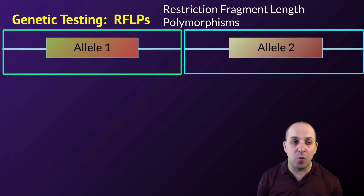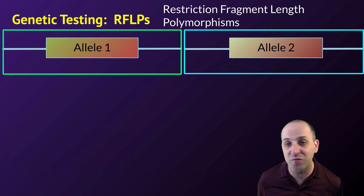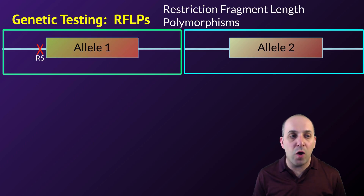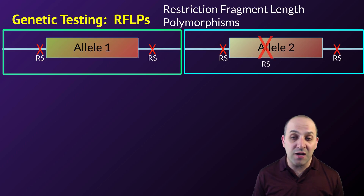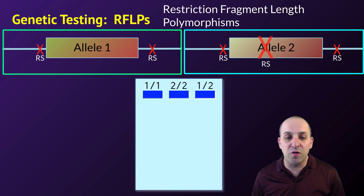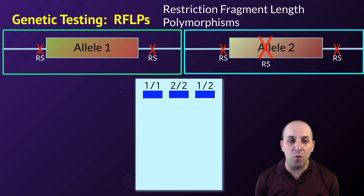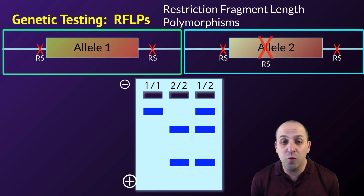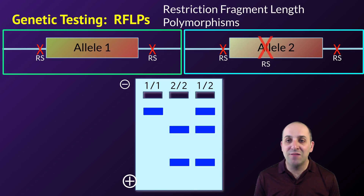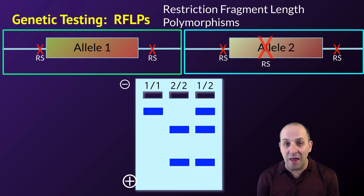Another major way genetic testing works is through restriction fragment length polymorphisms, or RFLPs. In this hypothetical example, two different alleles for the same trait are shown. Allele 1 has two restriction sites bracketing it; allele 2 has three restriction sites, with one in the middle. Treating these genes with restriction enzymes produces different-sized bands that we can visualize on an agarose gel. Individuals homozygous for allele 1 produce one fragment; those homozygous for allele 2 produce two fragments; heterozygous individuals produce all three fragments. Because individuals have different-sized restriction fragments due to the presence or absence of different sequences, we get the name restriction fragment length polymorphism, or RFLP.